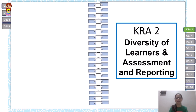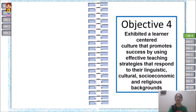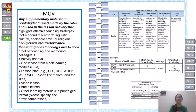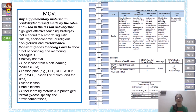KRA 2 covers diversity of learners and assessment and reporting. Objective 4 — exhibited a learner-centered culture that promotes success by using effective teaching strategies that respond to learners' linguistic, cultural, socio-economic, and religious backgrounds — likewise requires two MOVs. Highly proficient teachers are model teachers. MOV 1 is an activity sheet, and MOV 2 is one lesson from an SLM with one PMCF about this objective.